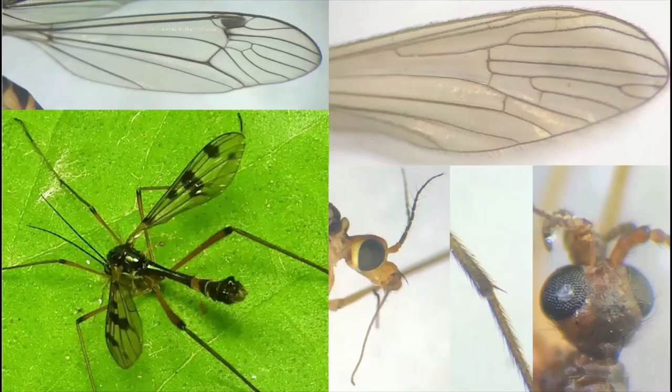As far as identification material is concerned, there are keys to all British species of crane flies available in the literature section of the Catalogue of the Crane Flies of the World, the details of which I'll put in the video description below. These are the ones I'll be referring to today. Firstly, I'll go through how to achieve a family level identification for your crane fly.